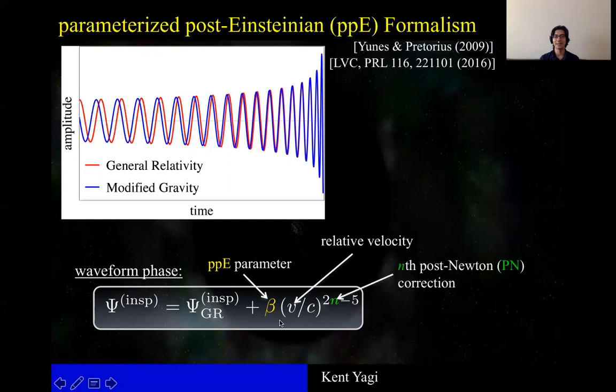For example, if this n is zero, then it means that the non-GR correction enters at the same order as GR.